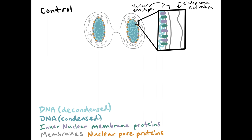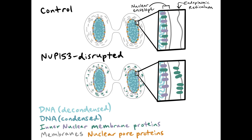In controlled conditions, we find that inner nuclear envelope proteins fully target to the nuclear envelope by telophase. When we disrupt the function of NUP-153, we find that a subset of nuclear envelope proteins fail to go to the nuclear envelope during telophase and instead accumulate in the endoplasmic reticulum.